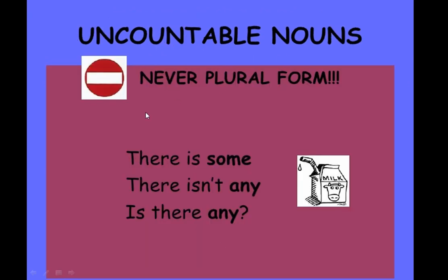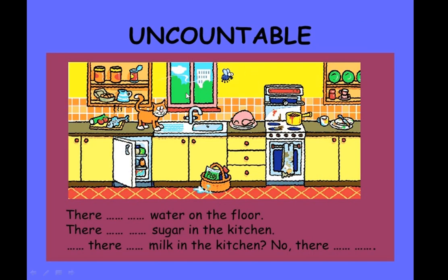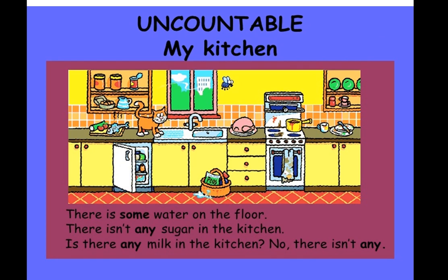Uncountable nouns never take a plural form. Examples: there is some milk, there isn't any milk, is there any? Looking at the picture, the answers are: there is some water on the floor, there isn't any sugar in the kitchen, is there any milk in the kitchen? No, there isn't any.